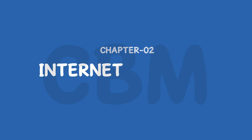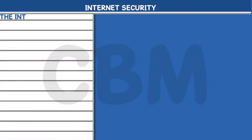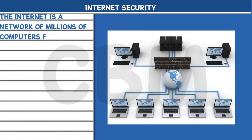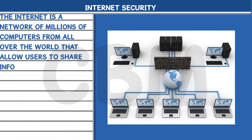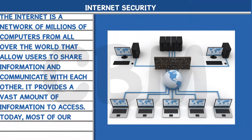Chapter 2: Internet Security. The Internet is a network of millions of computers from all over the world that allows users to share information and communicate with each other. It provides a vast amount of information to access. Today, most of our day-to-day activities depend on the Internet.